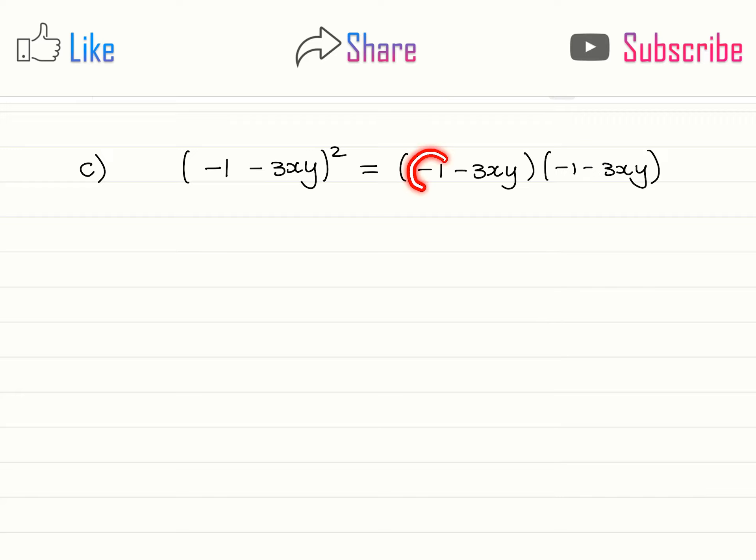And now we will multiply negative 1 with negative 1, that will give us plus 1. And then negative 1 multiplied with negative 3xy, which will give us plus 3xy.